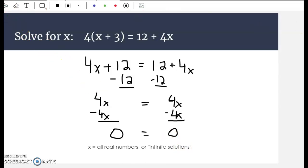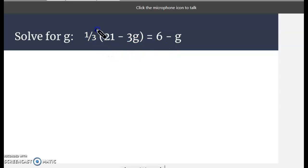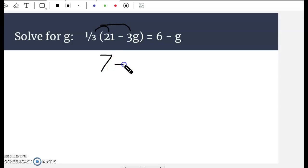Let's look at another one here and see what happens. This time it's 1 third of 21 minus 3g equals 6 minus g. We're going to distribute this 1 third to both sides. 1 third of 21 is 7, 1 third of 3 is 1. So we have 7 minus 1g equals 6 minus g.